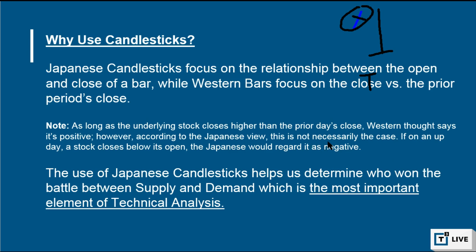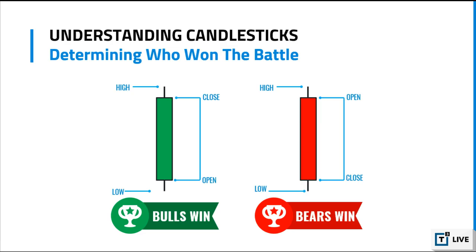However, according to the Japanese view, this is not necessarily the case. If on an up day a stock closes below its open, the Japanese regard it as negative, because their view is that supply and demand is the most important element of technical analysis. On a day where the stock closed lower than where it opened, that means there was more supply than demand, and that's the most important thing to know when looking at charts.